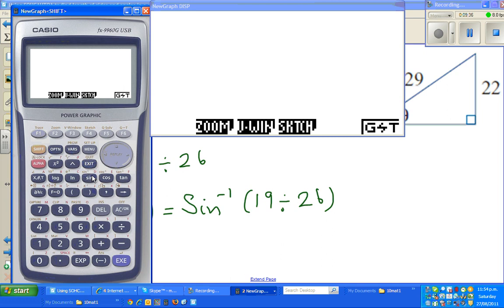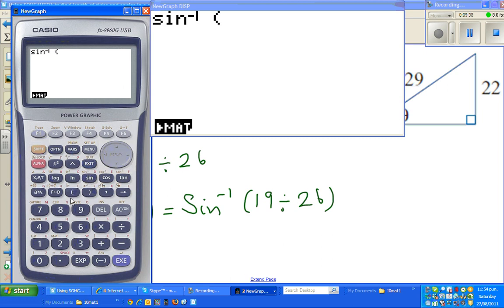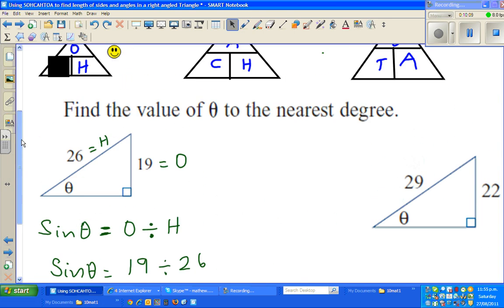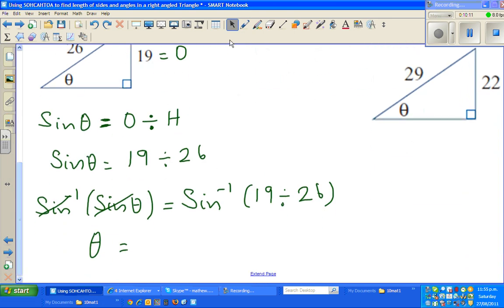So you go shift, sine, bracket, 19 divided by 26. Many students don't know why they have to take sine inverse. They are only told that they have to take sine inverse to get the answer. But the reason is sine inverse is the opposite of sine. So that will give you the answer, which is 46.95. I think you have rounded to the nearest degree. So if you round it to the nearest degree, it is 47 degrees. So the answer is 47 degrees.